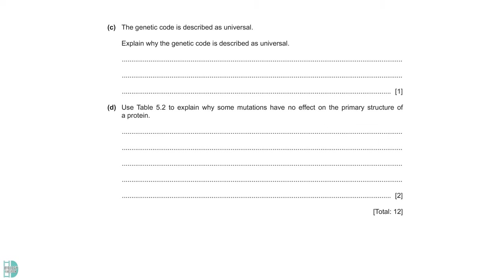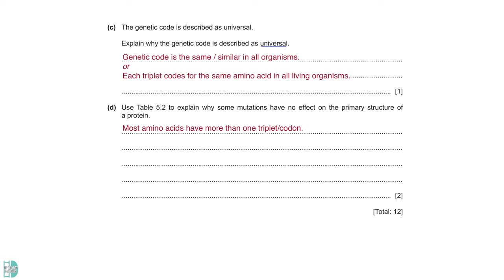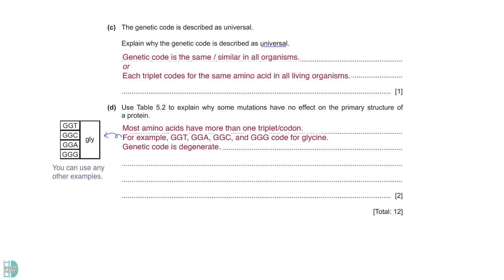C wants you to explain why the genetic code is described as universal. This is because the genetic code is the same or similar in all organisms. D, use table 5.2 to explain why some mutations have no effect on the primary structure of a protein. The table shows you that it is common to have more than one triplet or codon to code for the same amino acid. For example, GGT, GGA, GGC, GGG codes for glycine. This is known as the degenerate feature of the genetic code. This is also the reason why there are 64 possible codons for only 20 different amino acids.